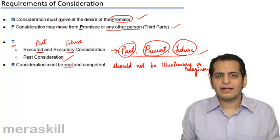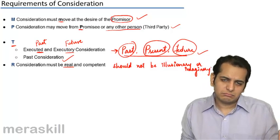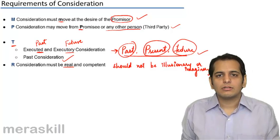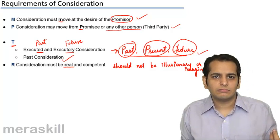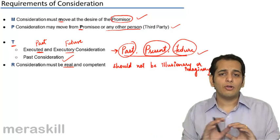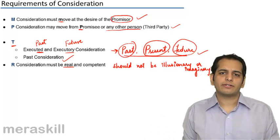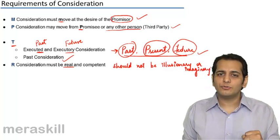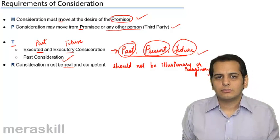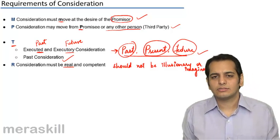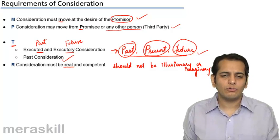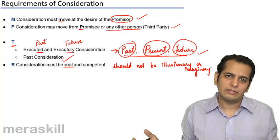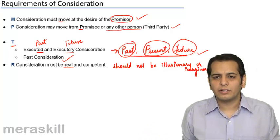There cannot be any contracts wherein happiness is the consideration, wherein sleep is the consideration, wherein love is the consideration. Law does not recognize any such contracts and if such contracts are made, such contracts would be assumed to be devoid of consideration and hence they will be void contracts. Law will assume that there is no consideration present in such contracts and thus these contracts will become void.